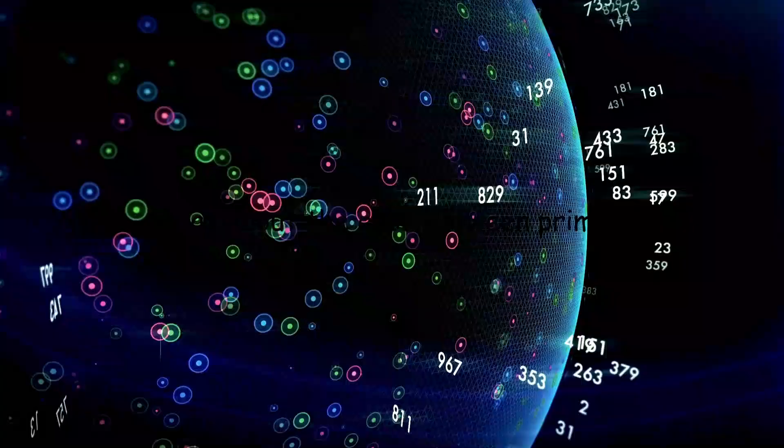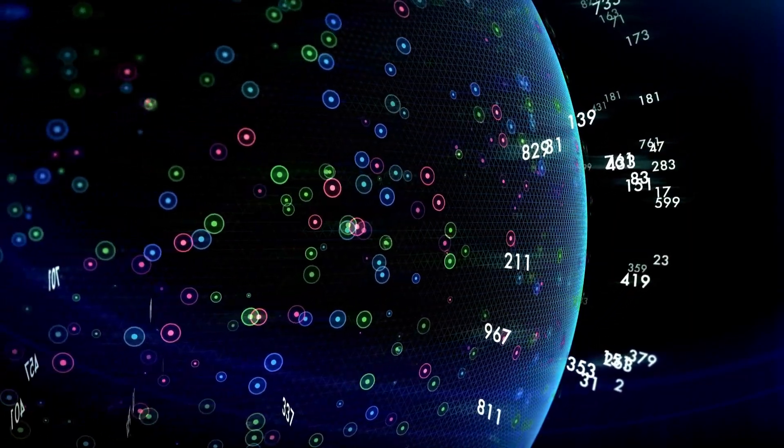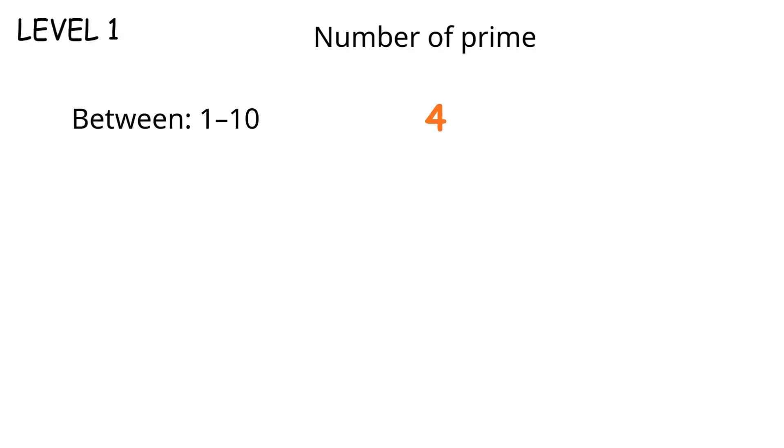Simple enough for small numbers. Now what about the gaps between primes? Well, as numbers get bigger, primes get rarer. Between 1 and 10, we've got 4 primes. Between 1 and 100, we've got 25. Between 1 and 1,000, we've got 168. The pattern? Primes thin out, but they never stop.